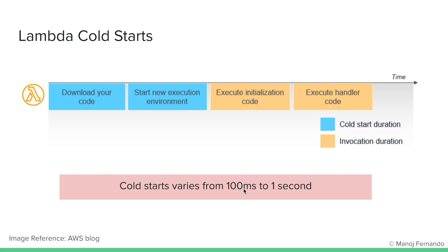The cold start duration could vary from 100 milliseconds to 1 second. Although you are not billed for this duration, it will add to your Lambda function's latency. However, subsequent invocations of the Lambda function, if they happen quite frequently, will try to reuse the same execution environment — we call these hot starts, because the code is already downloaded and the execution environment is already available. Remember that AWS Lambda will take out this execution environment from time to time, so there's a possibility that 1% of your Lambda invocations could land on cold starts.